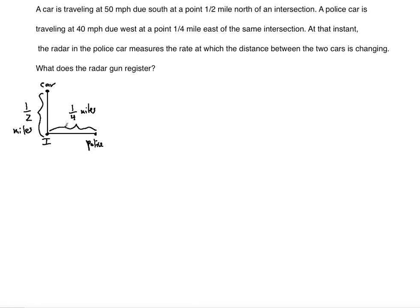We can use the Pythagorean theorem here because the cars travel due south and due west, meaning there is a 90-degree angle between their two roads. With the police car along the x-axis and the other car along the y-axis, we label the distance between the two cars as d. So we set up: x² + y² = d².